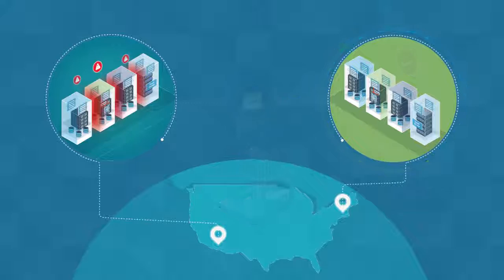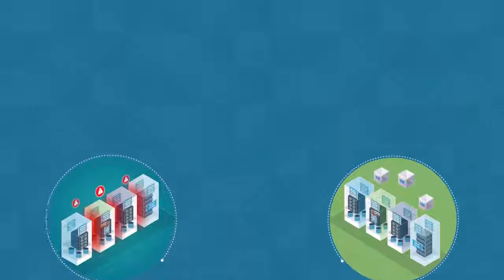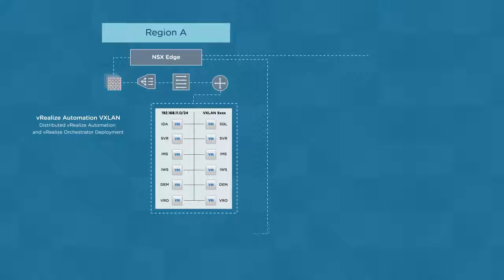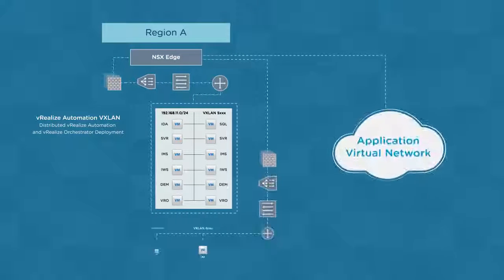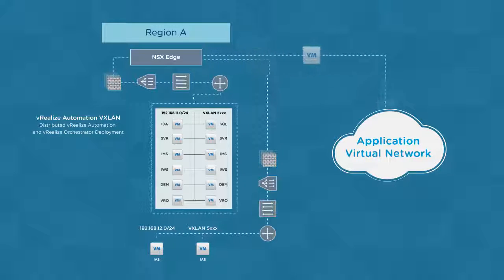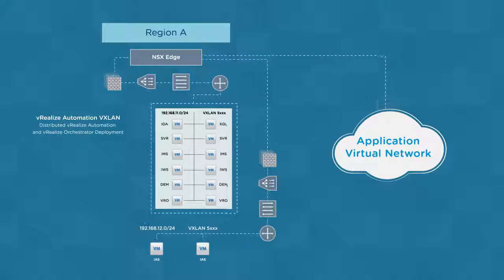To facilitate virtual machine failover between regions, the replicated virtual machines are deployed on isolated networks behind NSX Edge Services Gateways, which provide routing, NAT, and firewall services in a construct referred to as an Application Virtual Network.